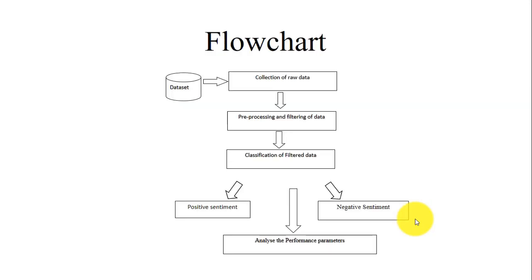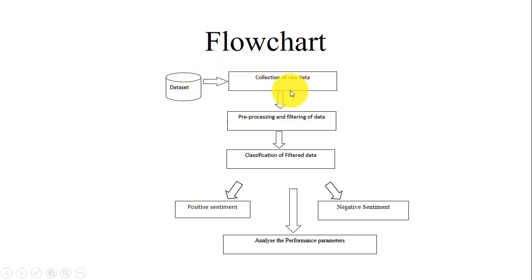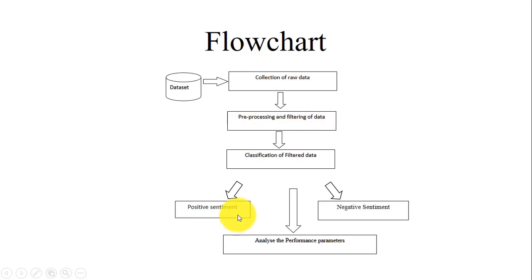The flowchart of the whole project starts with data collection. For movie reviews, we collected data from the IMDB online movie review site. We then collected raw data, applied a preprocessor to filter that data by breaking sentences into a bag of words, and finally classified the filtered data using Random Forest into positive or negative sentiment, then analyzed the performance parameters.